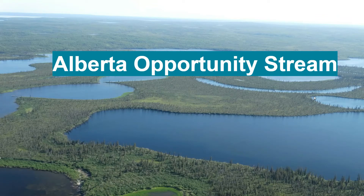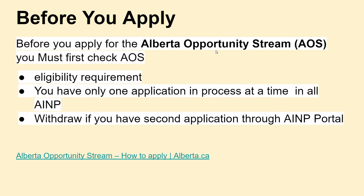Let's start the topic: Alberta Opportunity Stream. Before applying, you must check the eligibility criteria. You can only have one application in process at the same time in all Alberta Immigration Nominee Program portals. If you have a second application in the AINP portal, please withdraw that second application.